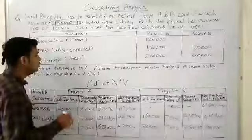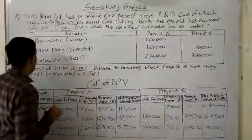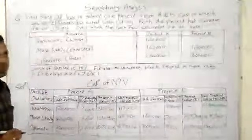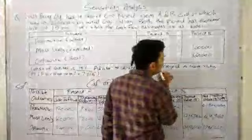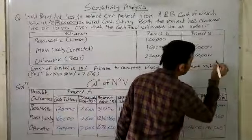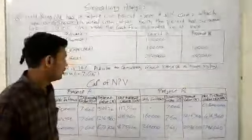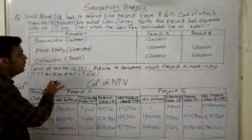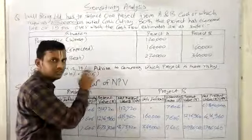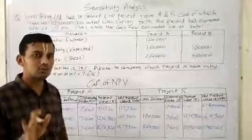In this particular project, it is said that we have cost of capital of 10%. We have to advise which project is more risky.